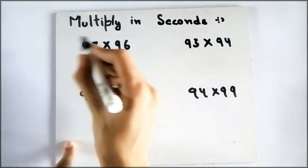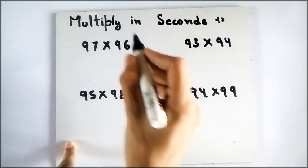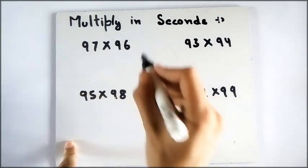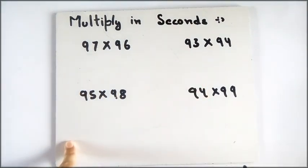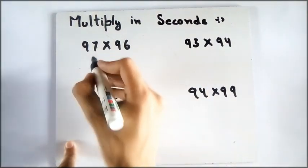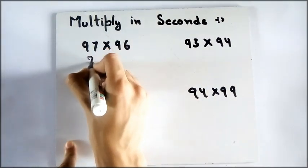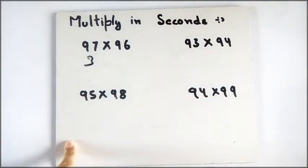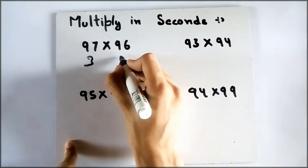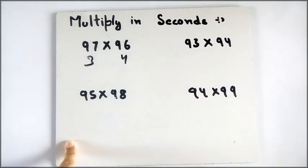In this trick, you have to just see how much those numbers are less than 100. Like, 97 has 3 less than 100 and 96 is 4 less than 100.